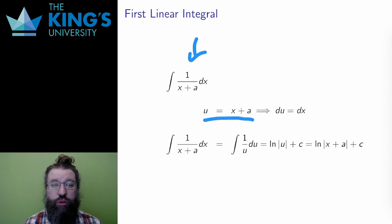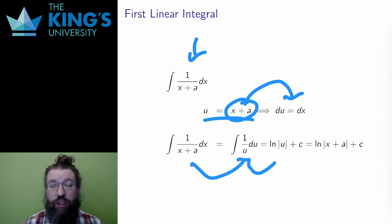By using the substitution u equals x plus a, with du equals dx, since the derivative of the substitution is 1, I can change the integral into 1 over u. And then I can use the known antiderivative of 1 over u to produce logarithm of absolute value of u plus a constant.